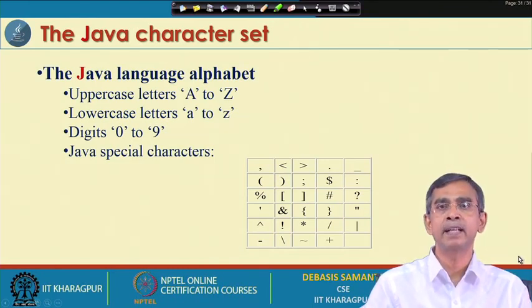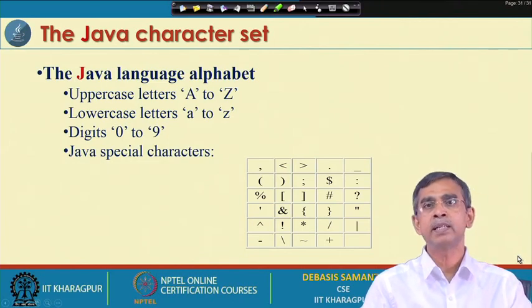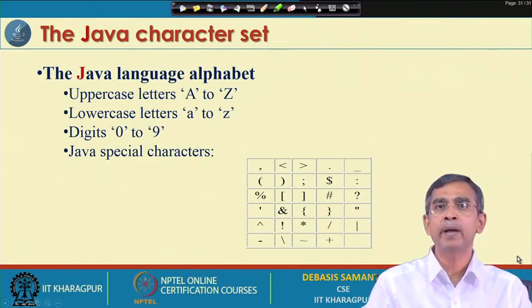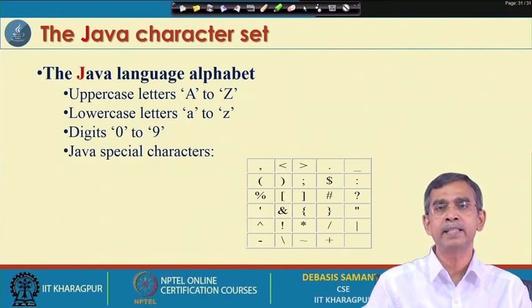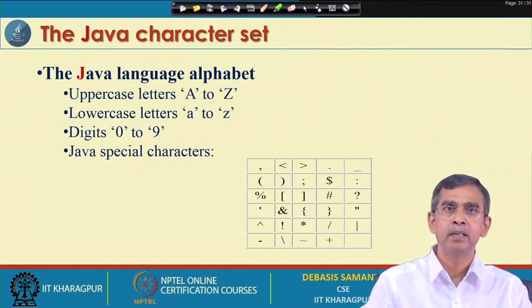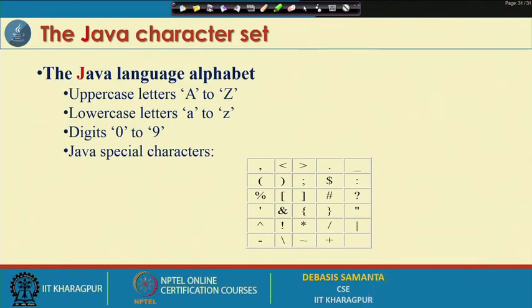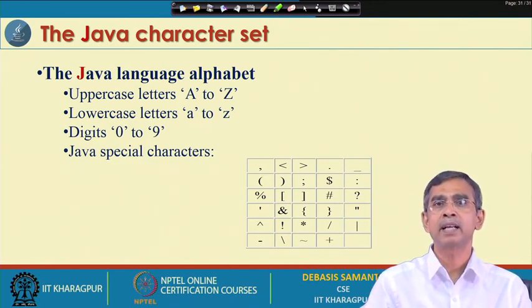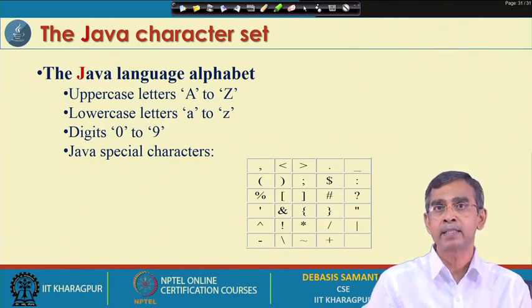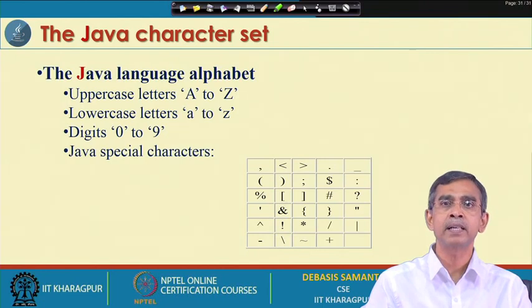For the Java character set - that means which characters you should use when writing a program. If you see the keyboard, there are a lot of characters there, but you should not press all keys to type your program. There are definite sets: uppercase letters A to Z are permissible, lowercase letters a to z, digits 0 to 9, and in addition some special character sets listed in this table. These are the characters you can use. If you use any other characters, your compilation will be erroneous - there will be an error when the program is compiled.